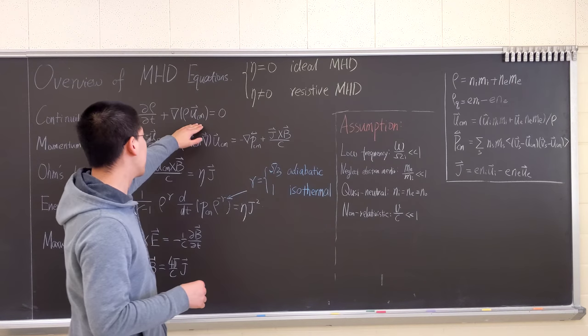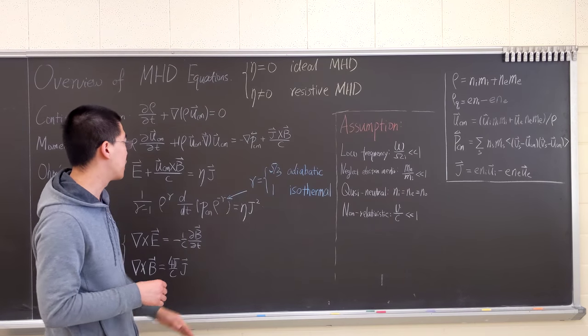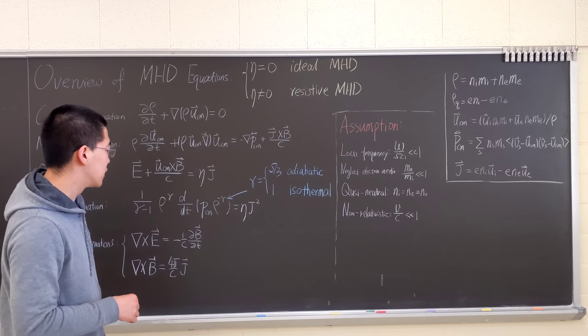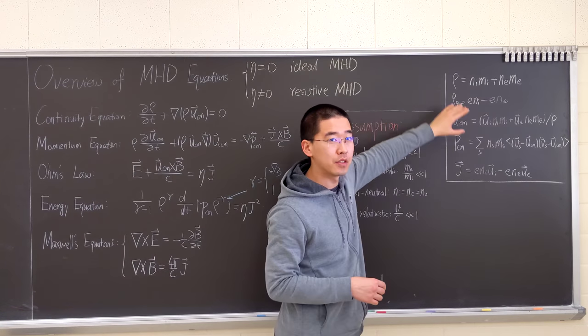Here we have center of mass velocities, center of mass pressure, current, mass density, stuff like that. I have definitions here.